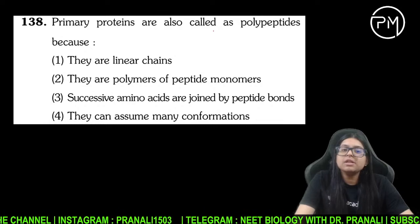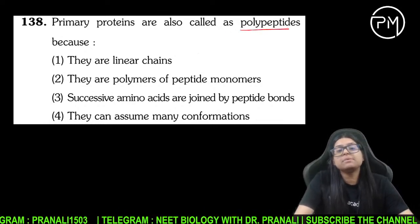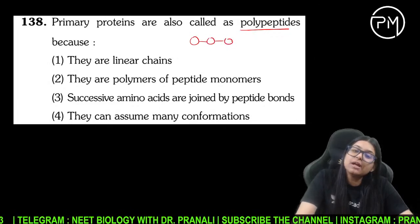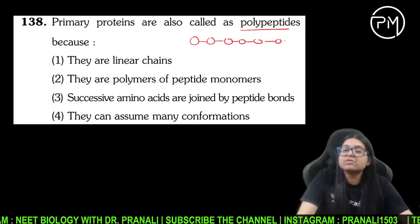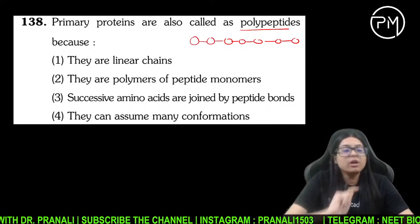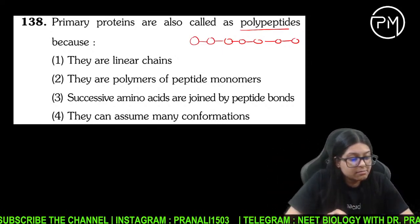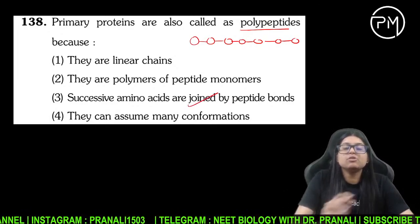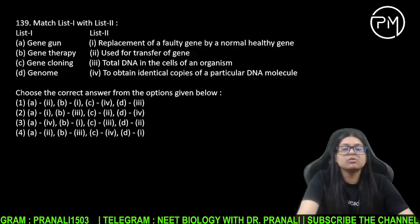Primary proteins are called polypeptides — primary proteins ko polypeptide kyun bola? Kyunki bahut saare peptide judke polypeptide banate hain. Jab bahut saare milke bana rahe hain — successive amino acids ko peptide bond ne joda.